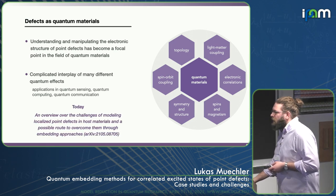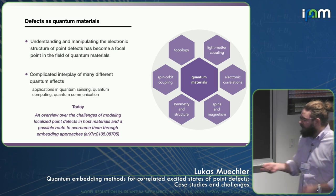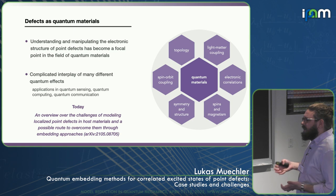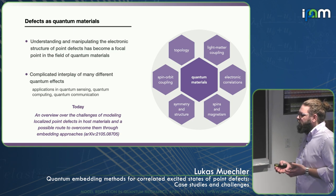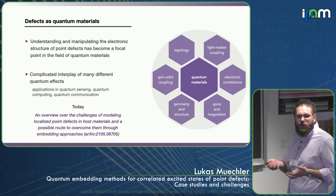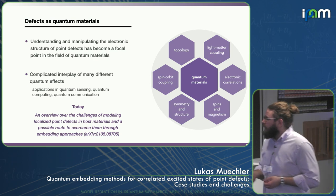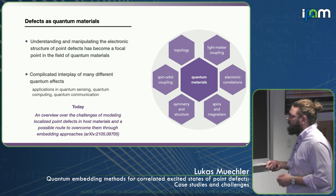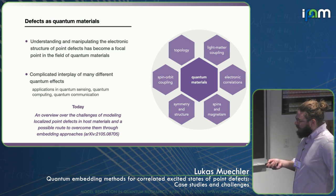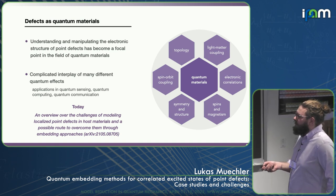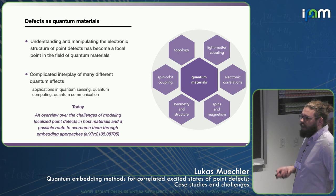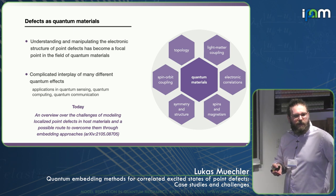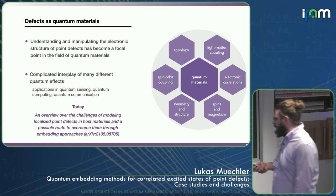What I'm going to talk about today is basically a preprint of ours, where we try to give an overview from our perspective on the challenges of modeling these defects and possible routes to overcome them. Because we have people with a background in dynamical mean field theories and physicist embedding theories, we can think about these problems from that perspective.